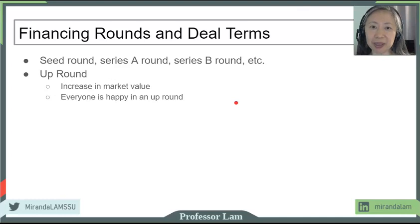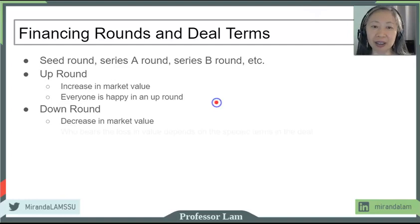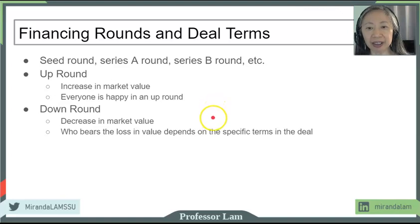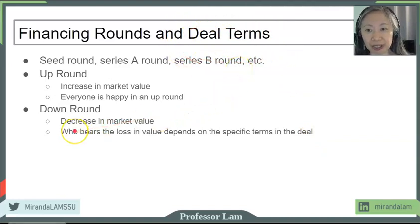Things become challenging when you have a down round. A down round is when the market value decreases. When your investment loses money, obviously no one is happy. What is important is to decide who bears the brunt of the losses. The deal terms here are the fine print that talk about what happens during a down round.